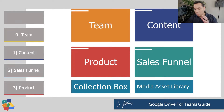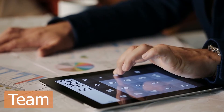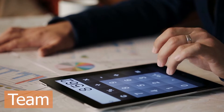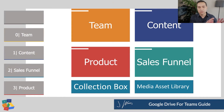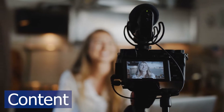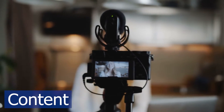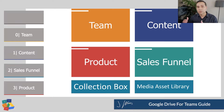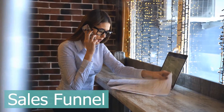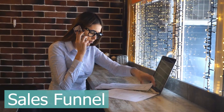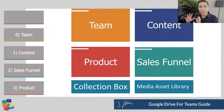The first thing I want to point out is what our four quadrants are. We have Team, Content, Sales Funnel, and Product. Team is going to be all of your administrative, project management, financial, and legal stuff. Content is going to be anything related to creating content for social media or your blog. Sales Funnel is going to be all of your sales files — webinars, sales funnels, sales call notes — all of your sales process information and documentation in one place.